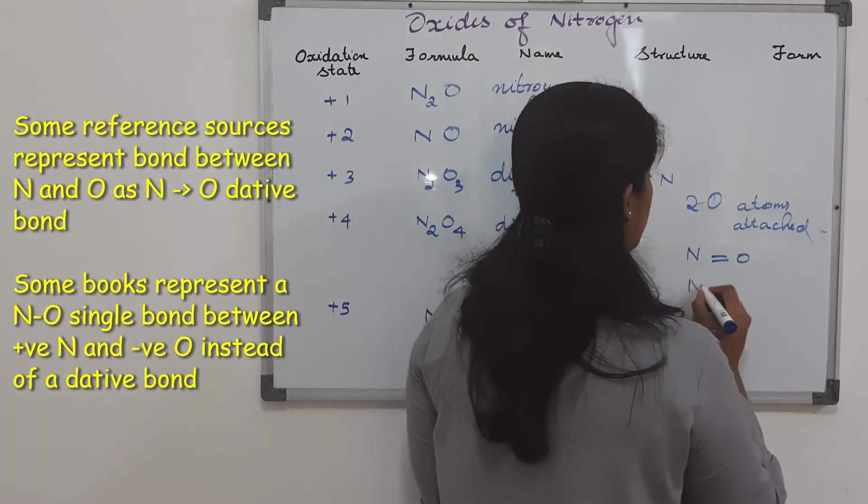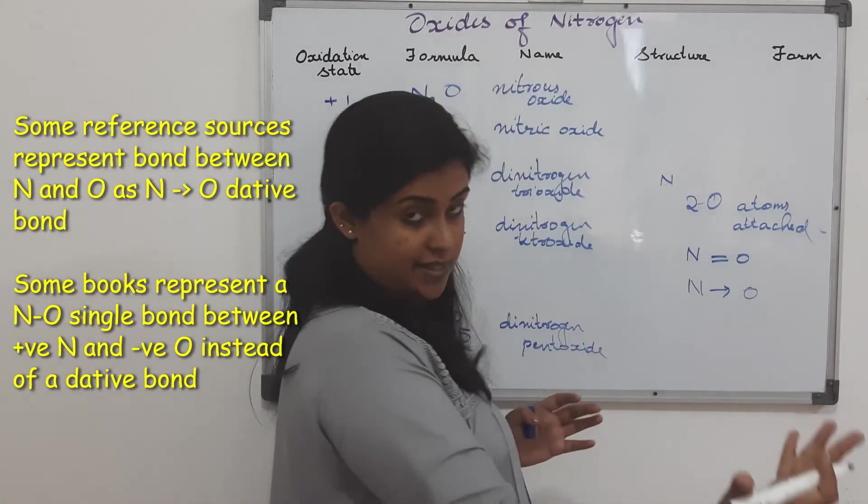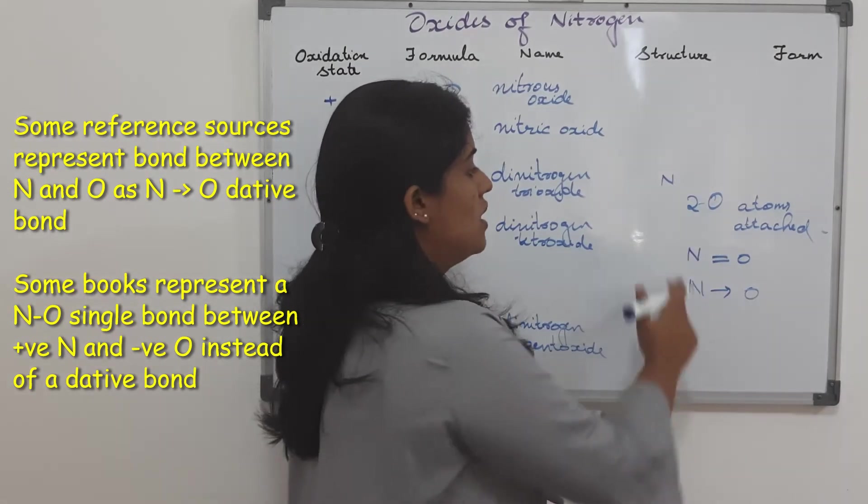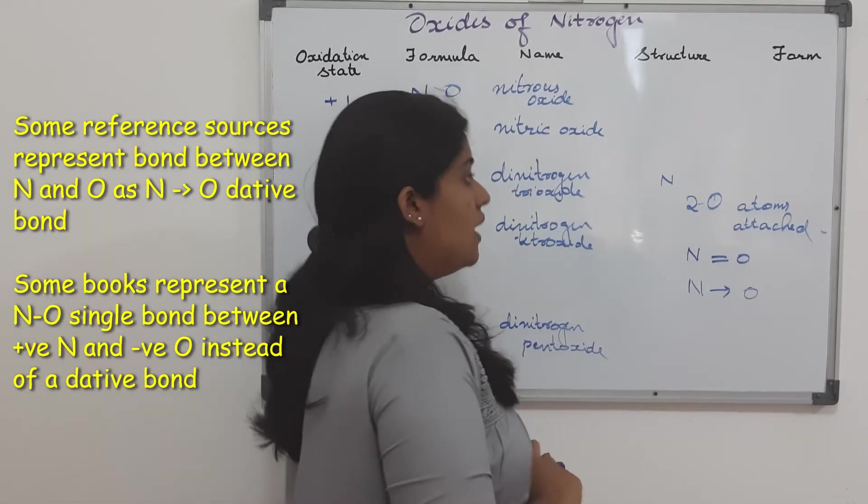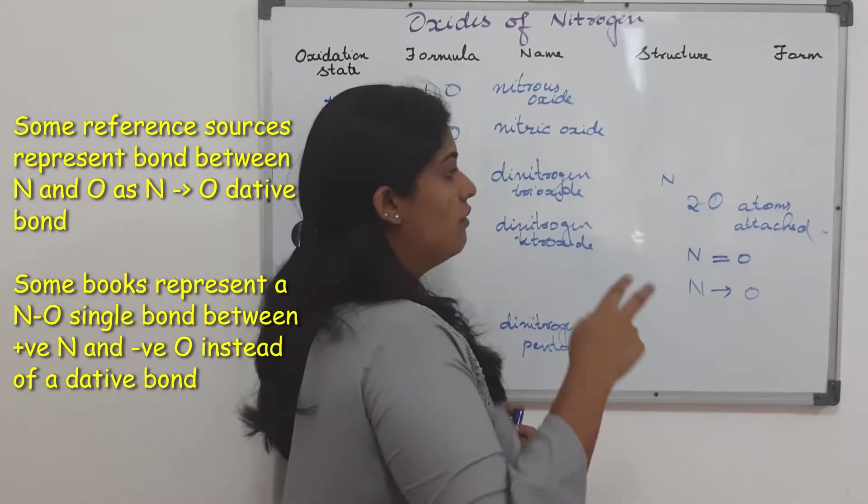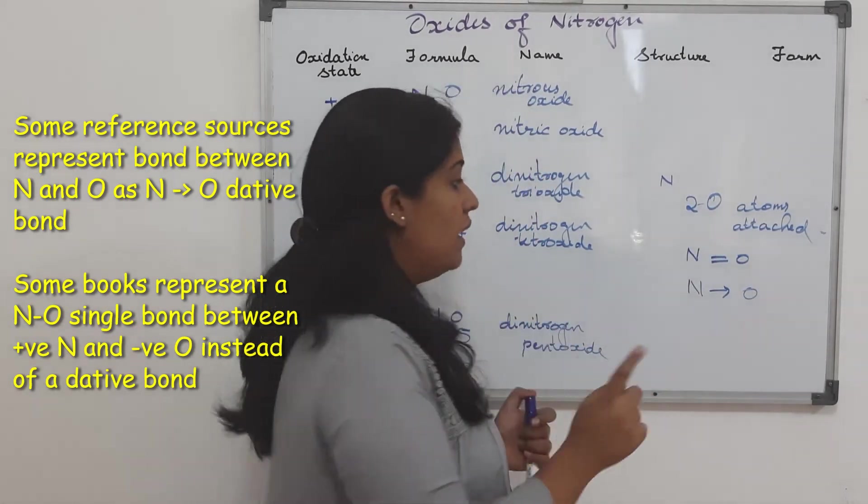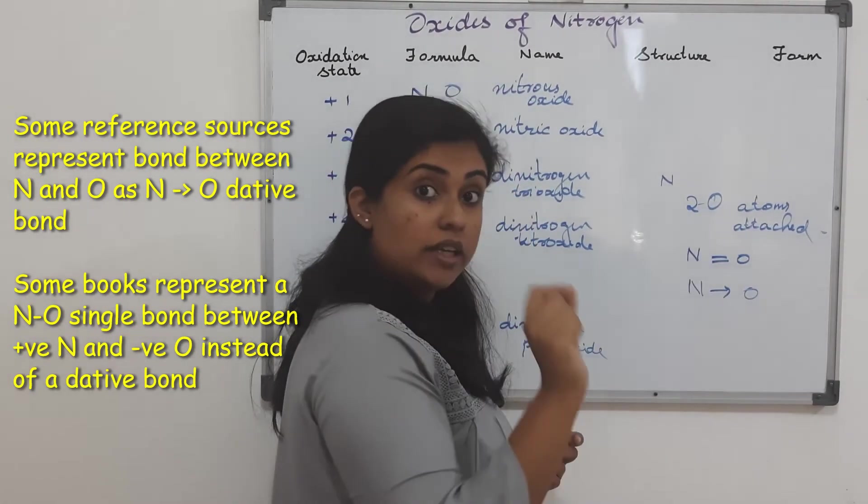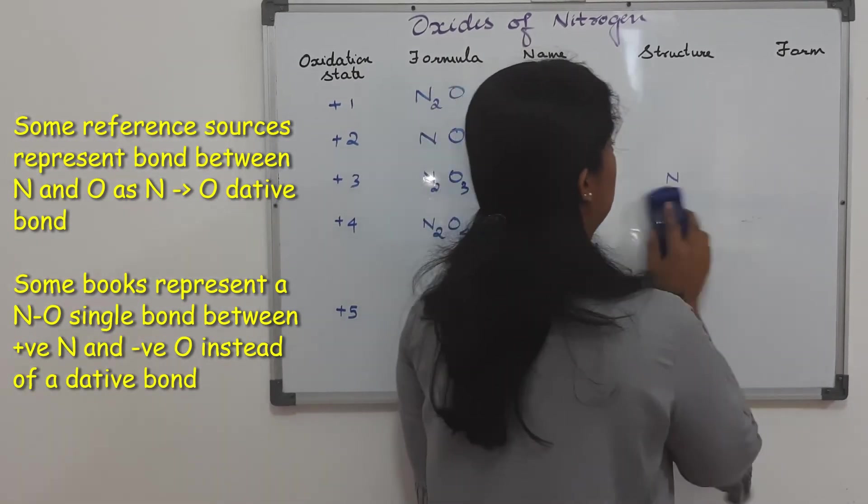And one of the oxygen would be double bonded. One of it will be N double bond O. And the other one would be a dative bond or a coordinate bond where nitrogen donates its lone pair of electrons completely to oxygen. Keeping this in mind, we are going to draw these structures.